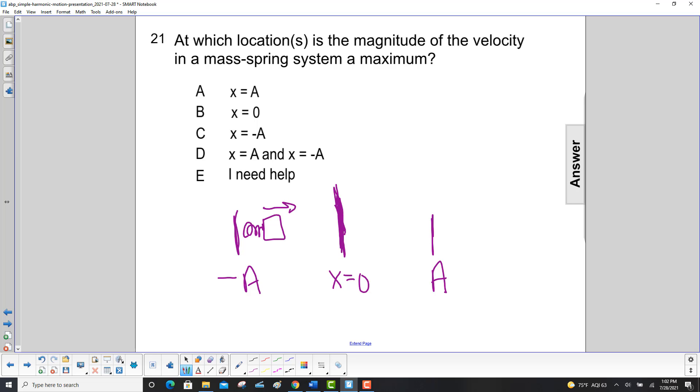So at this point here, what happens? It then goes over here. So now you have a positive displacement, which means the force is in this direction.